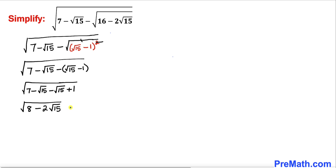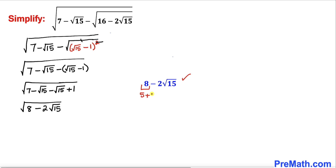Now let's focus on the new radicand: 8 minus 2 times square root of 15. Here I have copied it down. I'm going to write 8 as 5 plus 3, and this square root of 15 could be written as square root of 5 times square root of 3.